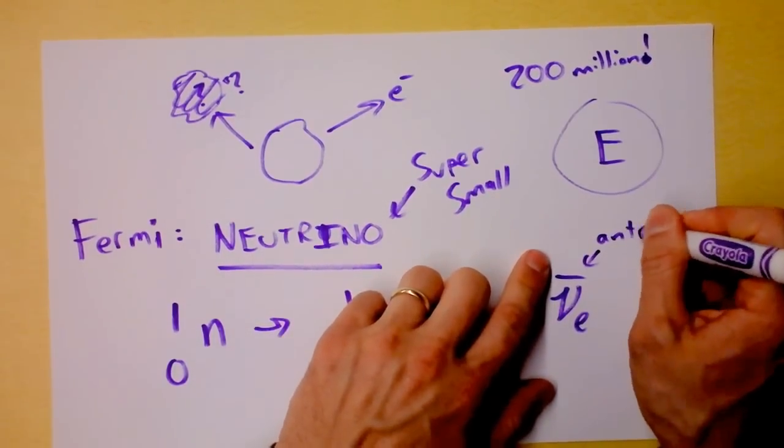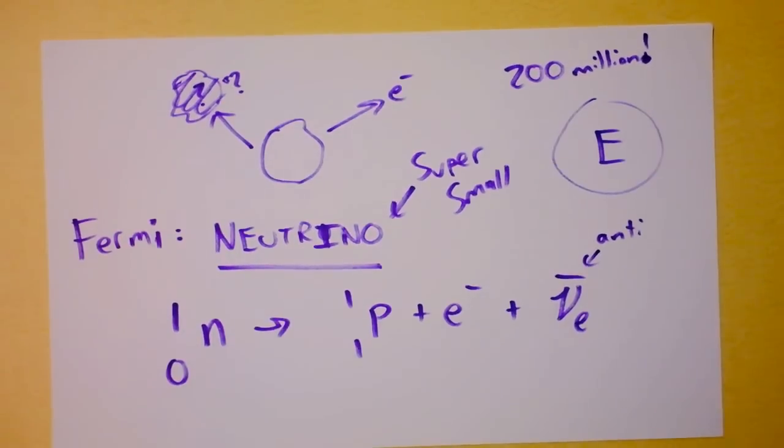So beta decay is now a neutron going into a proton and an electron and also an anti-electron neutrino. That's what that means there. That is anti. And that just means it's going backwards in time. What? You want a nuclear physics class? This is an intro physics class. Go watch somebody else's videos. Goodbye.